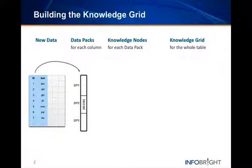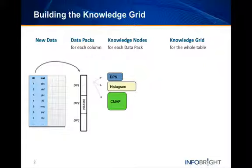Next, three different knowledge nodes are created for each data pack by extracting summary information from the data. These knowledge nodes are called data pack nodes, numerical histograms, and character maps.